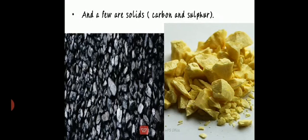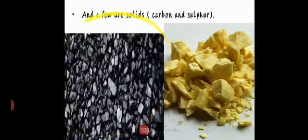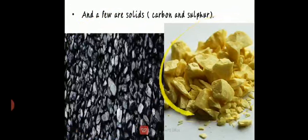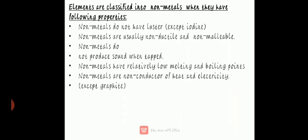A few non-metals are solids — for example, carbon and sulfur. Elements are classified as non-metals when they have the following properties: non-metals do not have luster, meaning they don't have a shiny surface, except iodine, which has a lustrous surface. Non-metals are usually not ductile and not malleable, meaning they cannot be molded into sheets or wires.